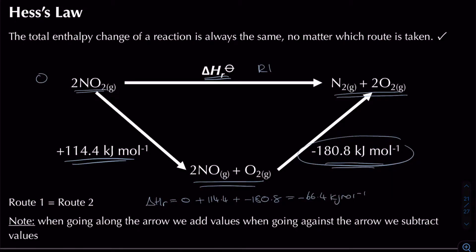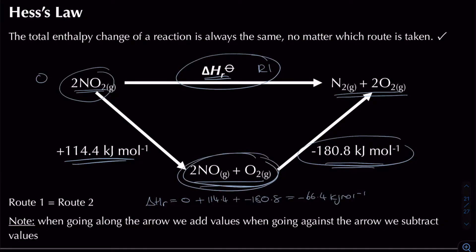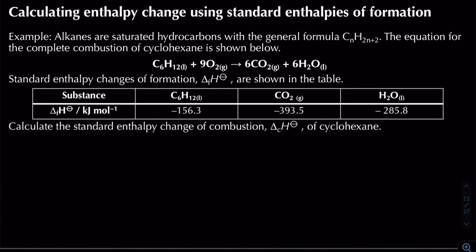Another way to indirectly calculate enthalpy change is to use standard enthalpy changes of combustion and formation data to form Hess's law cycles. For example, alkanes are saturated hydrocarbons with the general formula CₙH₂ₙ₊₂, and the equation for the complete combustion of cyclohexane is shown below, with standard enthalpy changes of formation given in the table.